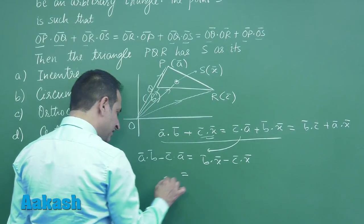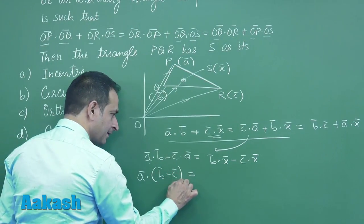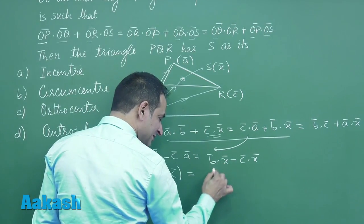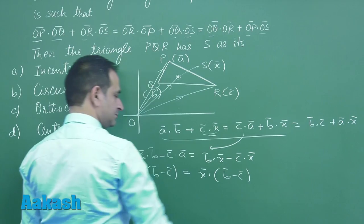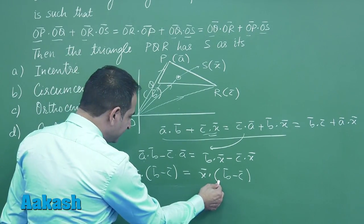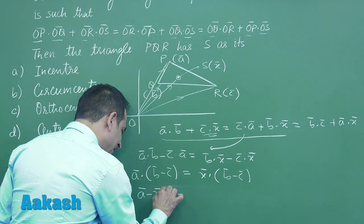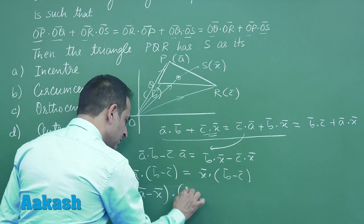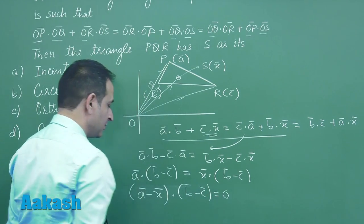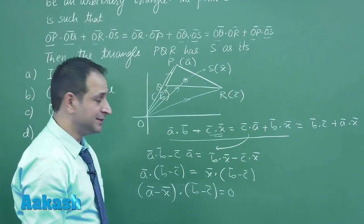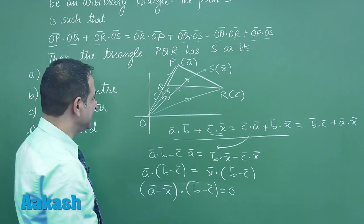You can clearly see here we can take a common, and again here we can take x common. So bringing this term on the left-hand side, you can see (a - x)·(b - c) = 0. So you can clearly see that a - x is perpendicular to b - c.